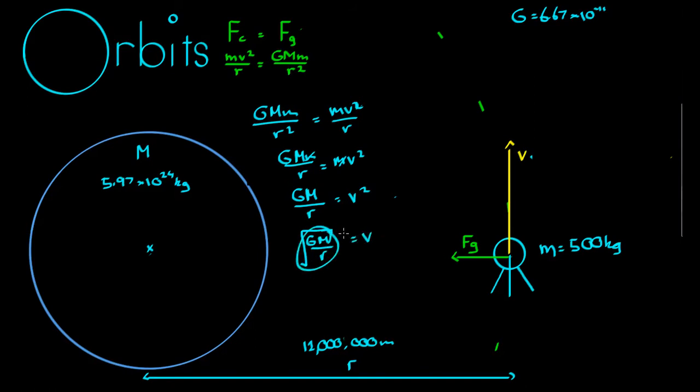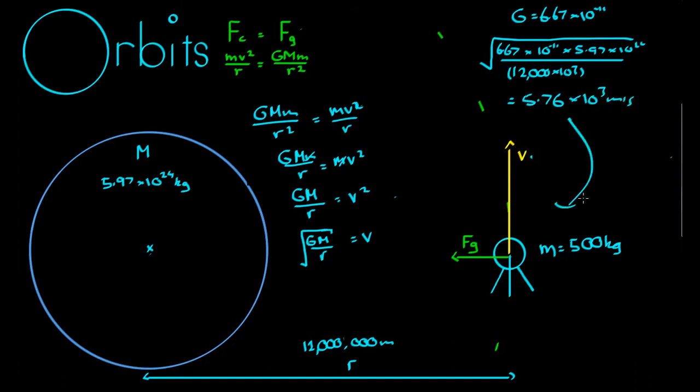And now we can sub in the values to see if we get the same v value, because this is the same problem we just solved, but we didn't have to muck around using m, we can just skip straight to the final step. The square root of 6.67 times 10 to the negative 11 multiplied by 5.97 times 10 to the 24 all over r, which is 12 thousand times 10 to the 3, gives 5.76 times 10 to the 3 m per second, which is the same answer we had. But as long as this part is right, the chance that we use our calculator incorrectly is a little lower if we're just doing one step here, provided you know how to use your brackets properly.